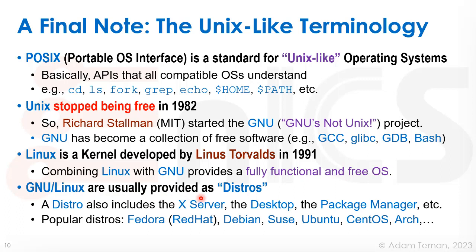GNU-Linux is usually provided as distros — distributions. A distro, besides the Linux kernel and the GNU libraries, also includes an X server providing the windowing-type terminals, the desktop which is the real UI, a package manager enabling you to download packages from a repository, and other things. That's all included in the distro.